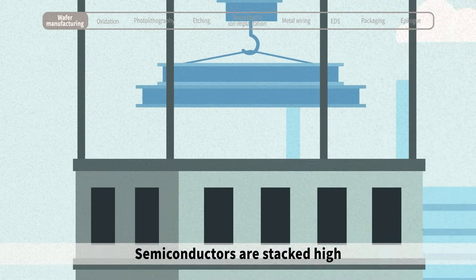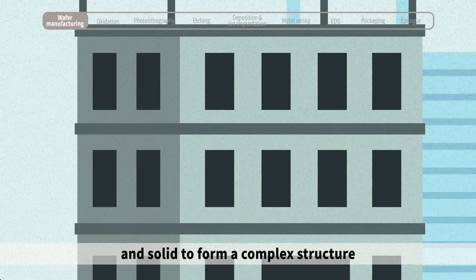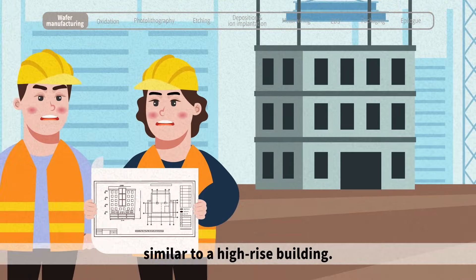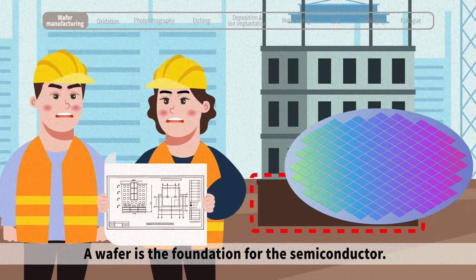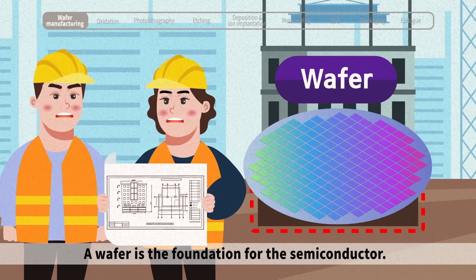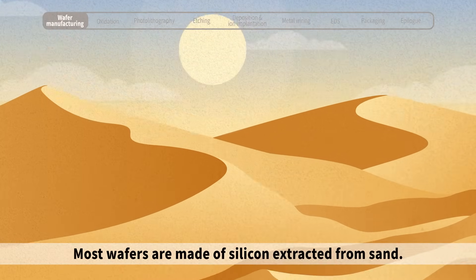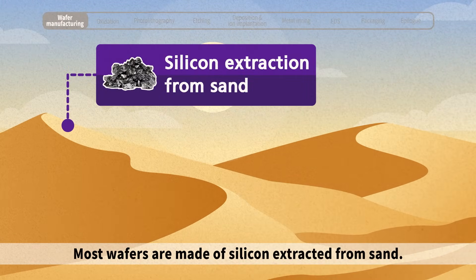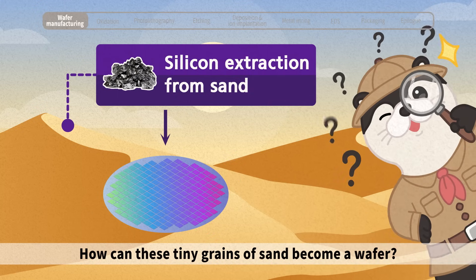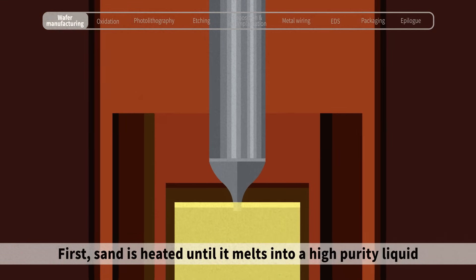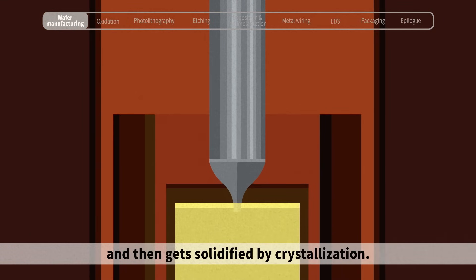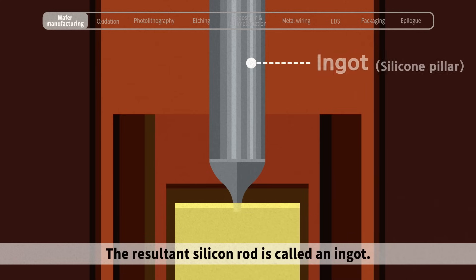Semiconductors are stacked high and solid to form a complex structure, similar to a high-rise building. Constructing a building starts with the foundation. A wafer is the foundation for the semiconductor. Most wafers are made of silicon extracted from sand. Sand is heated until it melts into a high-purity liquid and then gets solidified by crystallization. The resultant silicon rod is called an ingot.